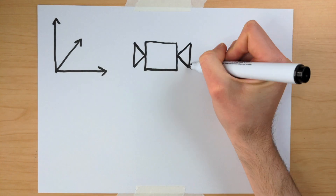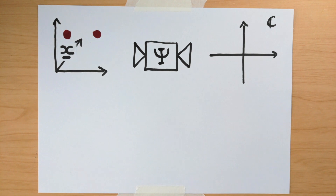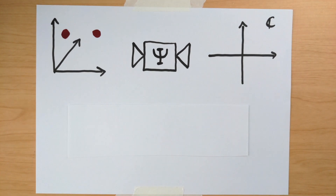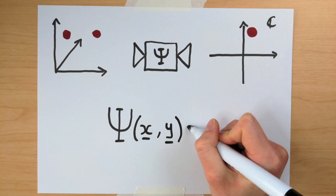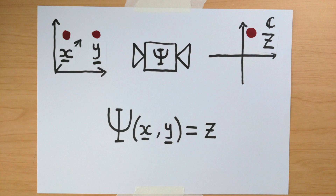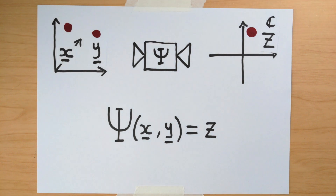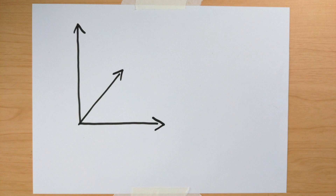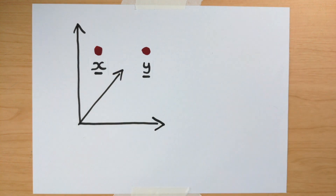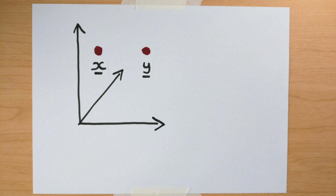Let's now suppose we have two particles, one with position x and another with position y. The wave function describing the full system then takes in two sets of coordinates, x and y, and spits out a single complex number. We write this as psi of x comma y equals z. This wave function encodes the probability of finding one particle at x and the other at y. Now, we're going to assume that these two particles are indistinguishable — there is nothing you could do to identify one or the other. They're like twins that you're guaranteed to get confused. Let's call one of these twin particles Fred, and maybe the other one George. Because they are utterly indistinguishable,